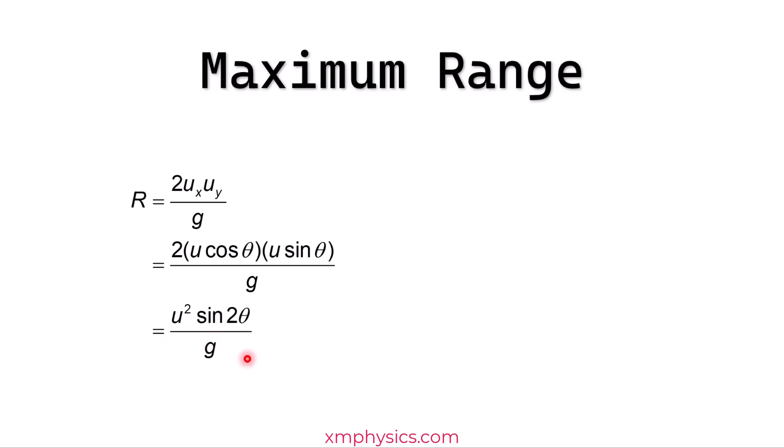So look at this formula here. u squared is fixed because we are thinking of projectiles at different angles but at the same speed u. So u squared is fixed, so is g. So r varies with theta according to the sine 2 theta function.